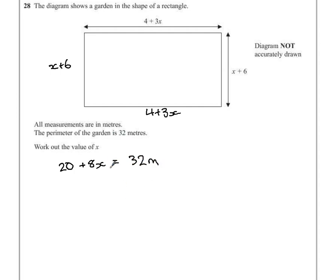So to solve this we just have to solve this equation now. We've added together our perimeter values and made it equal to 32. Work backwards. See what we need to do. So we have 8 times x add 20.